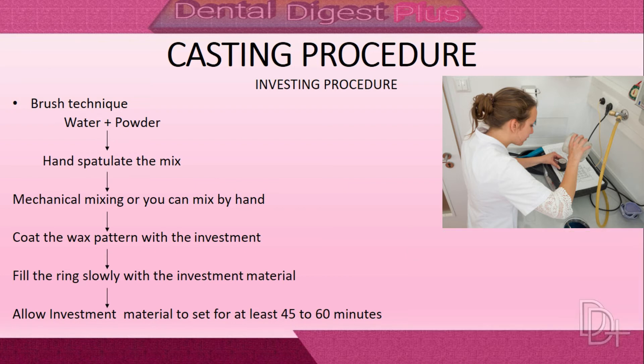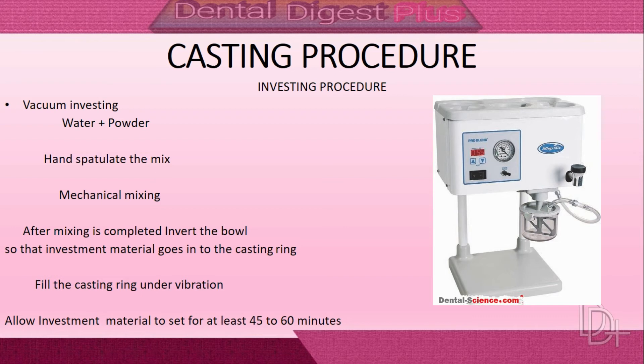The investment material should be allowed to set for at least 45 to 60 minutes. In vacuum investing, the mix is hand-spatulated, the bowl is closed with a lid that has a spatula and casting ring attached. A vacuum hose is attached and mixing proceeds per manufacturer's recommendations. After mixing, without removing the vacuum, the bowl is inverted so investment flows into the casting ring under vibration. The vacuum hose is removed before setting, and the material sets for 45 to 60 minutes.